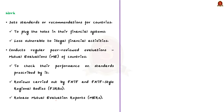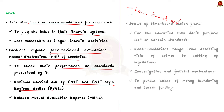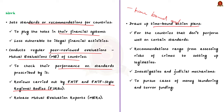FATF's working procedures: first, it sets standards or recommendations for countries to plug loopholes in the financial systems. Second, FATF conducts regular peer-reviewed mutual evaluations of countries to check their performance on prescribed standards, carried out by FATF and FATF-style regional bodies, which then release mutual evaluation reports. Third, FATF draws up time-bound action plans for countries that don't perform well on certain standards. Recommendations range from assessing the risk of crimes to setting up legislation, investigative, and judicial mechanisms.